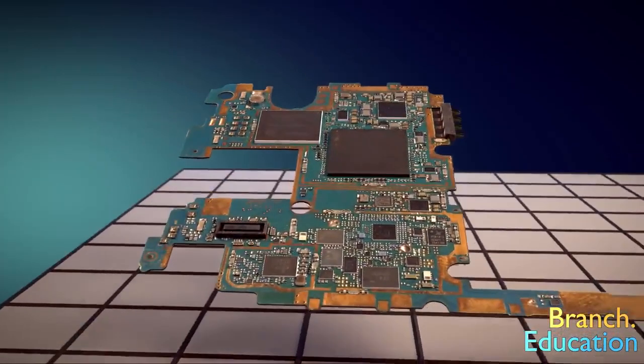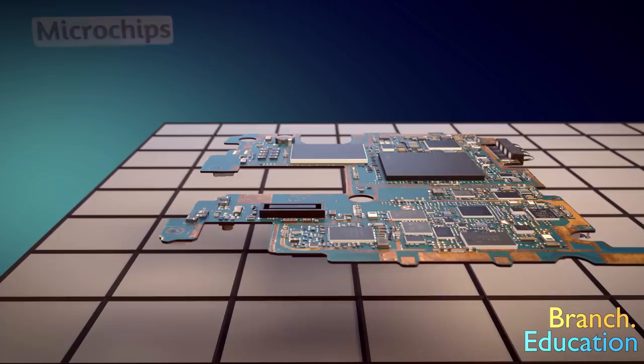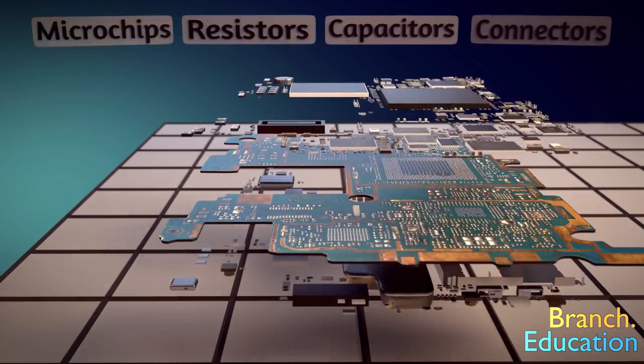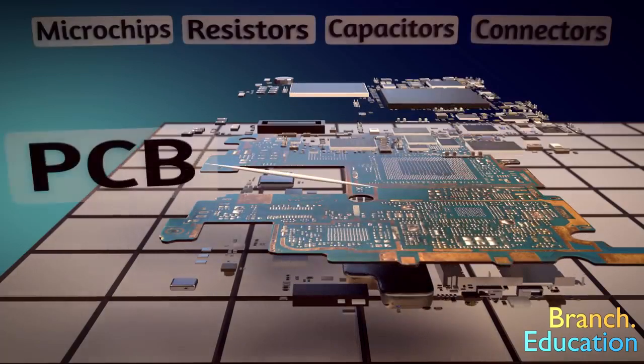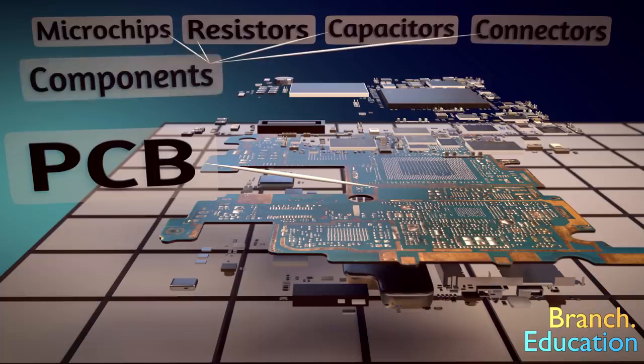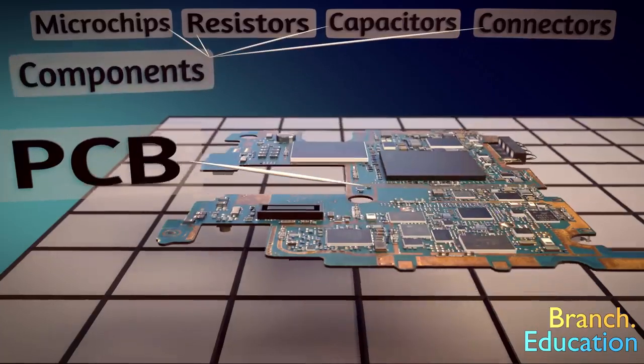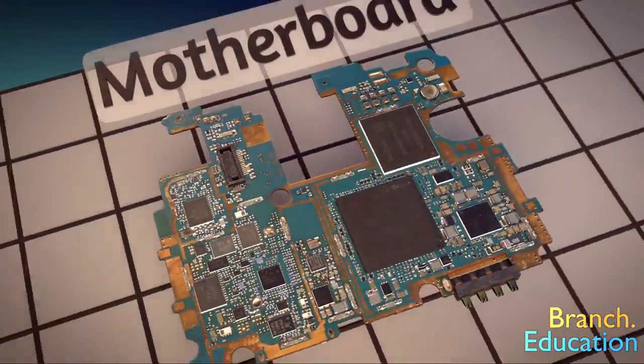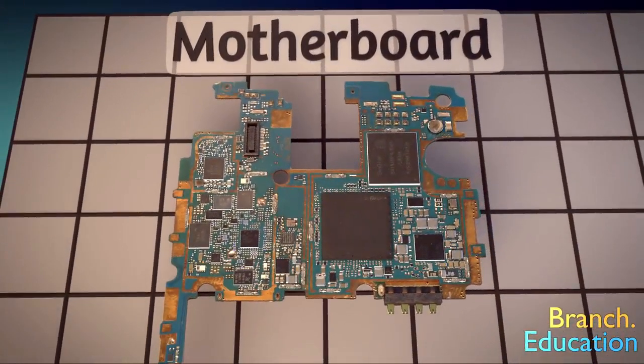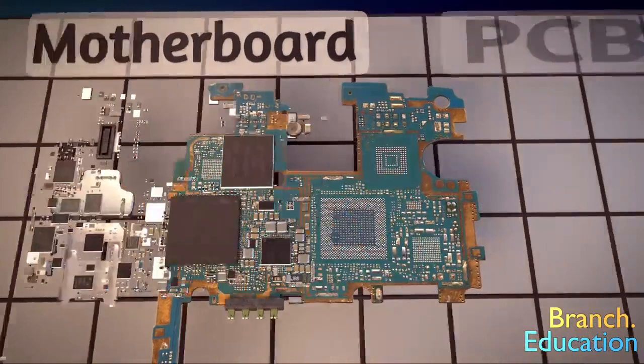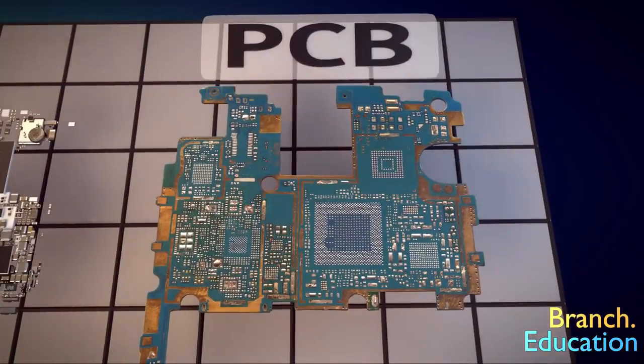First, let's establish the difference between components such as the microchips, resistors, capacitors, connectors, and the printed circuit board itself. These are the components, and they are solder mounted or attached to the PCB. The term motherboard refers to a printed circuit board with the components mounted to it, whereas a PCB is just a flat board without anything on it.